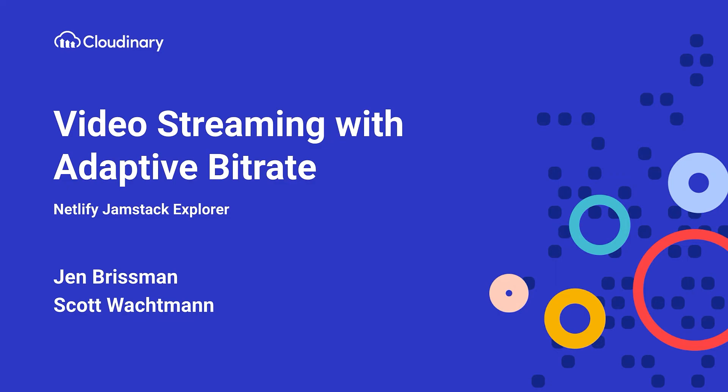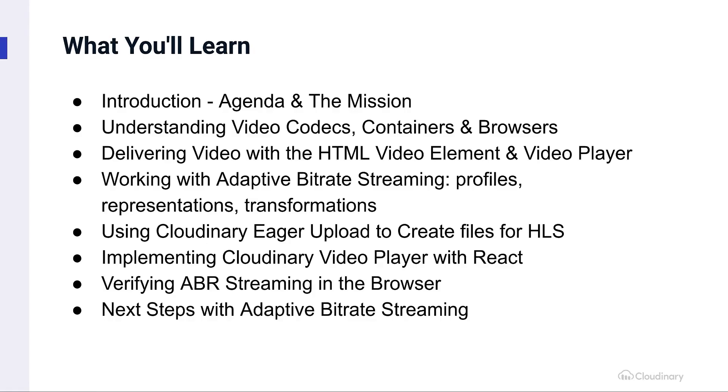ABR is here to help. Adaptive bitrate streaming is a technology designed to deliver video to the user in the most efficient way possible and in the highest usable quality for each specific user. And you can see it's more important now than ever. Our mission is to stream video and make sure it adapts to different network bandwidths. Let's get started.